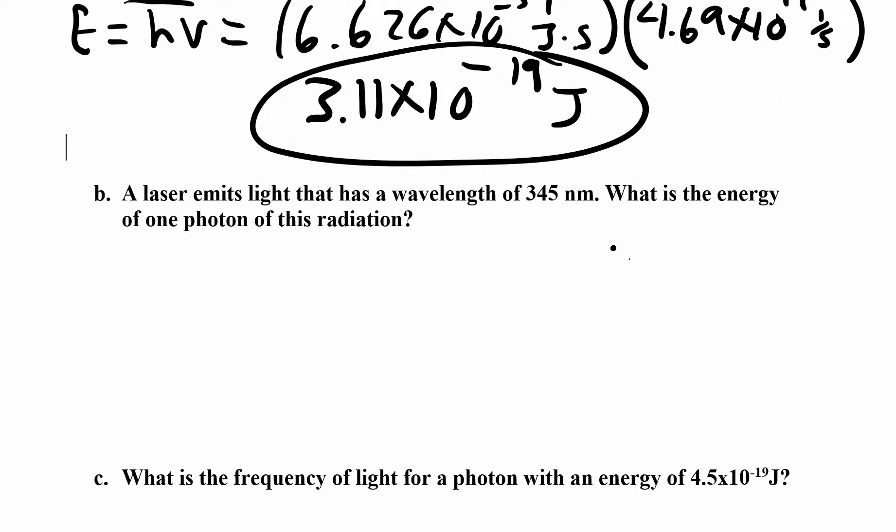Now, the next one, they tell you you have a laser with a wavelength. So now they're giving you wavelength, 345 nanometers, and they want to know the energy. So this time, this is wavelength, right? So you can do two things.